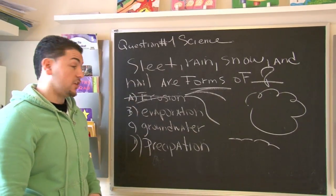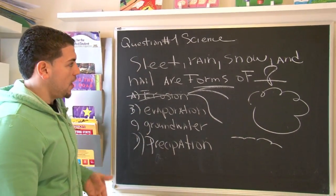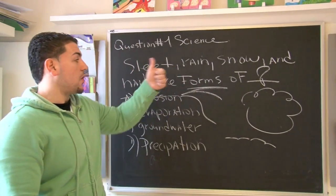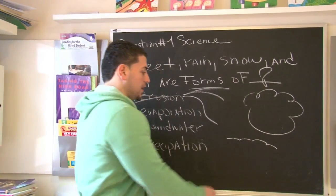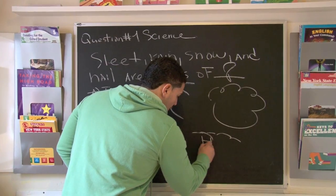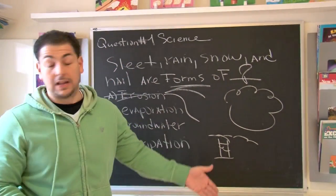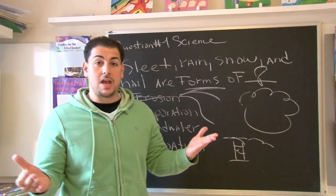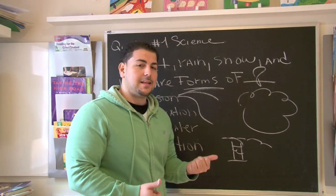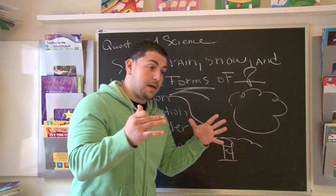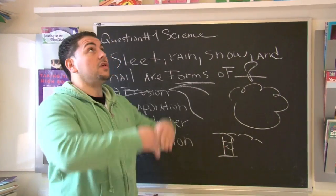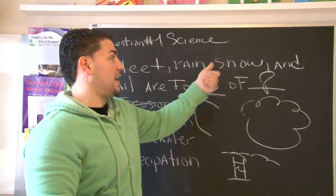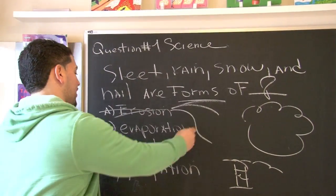Now we're left with three other choices. Evaporation. Let's look at the question — sleet, rain, snow, and hail are all forms of... When we think about evaporation, think about that cup of water. If we leave it out overnight, it's like somebody else drank it. It's not that somebody drank it — the temperature in the atmosphere caused the water to evaporate into the sky, which will come back later as sleet, rain, snow, or hail. So this has got to go too.